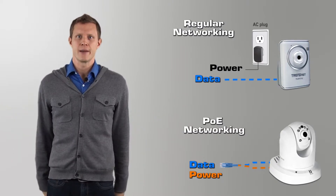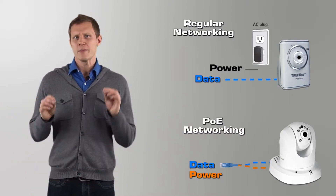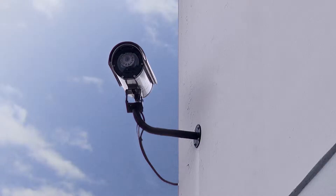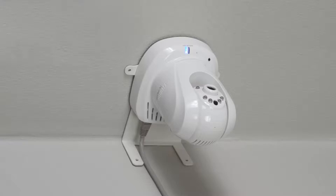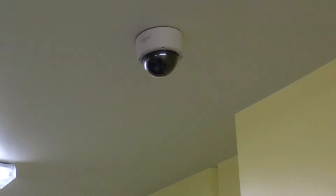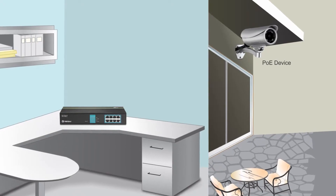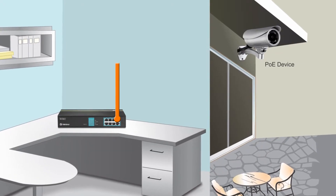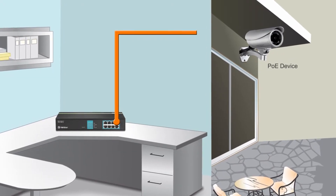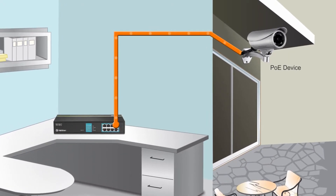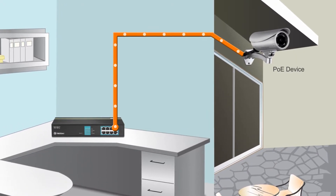Who cares, you might say? Well, think about it. Internet cameras are usually mounted in areas that are far away from existing electrical outlets. In these cases, you can either pay an electrician to extend the electrical outlet to your camera's location, or you can use PoE technology to send power and data to the IP camera.